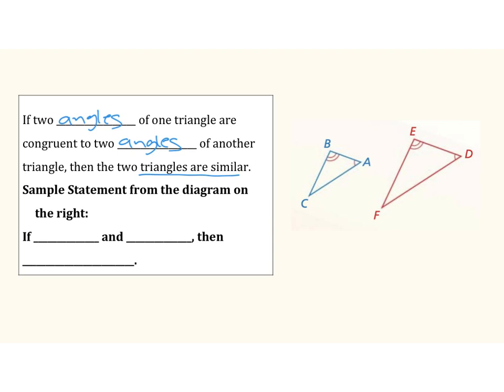Let's go ahead and write down those statements. Angle A is congruent to angle D, and angle B is congruent to angle E. We now have enough information to say that our triangles are similar. When we name our similar triangles, we want to follow the pattern of our similar angles. So for our smaller triangle, triangle ABC, I want to name the similar angles for the larger triangle in the same order I've named them in my smaller triangle.